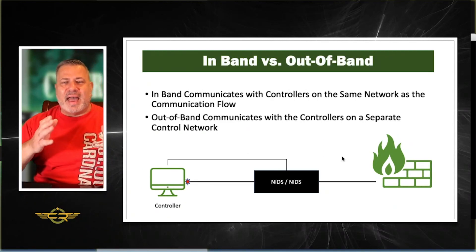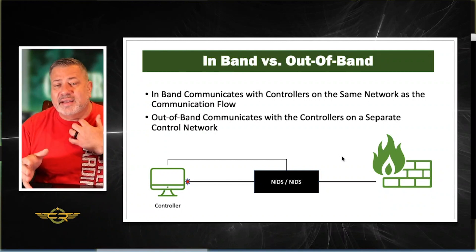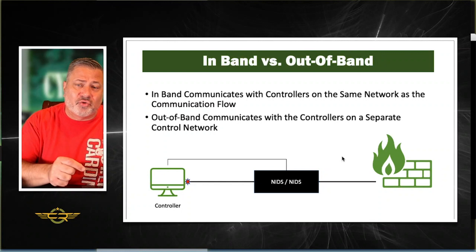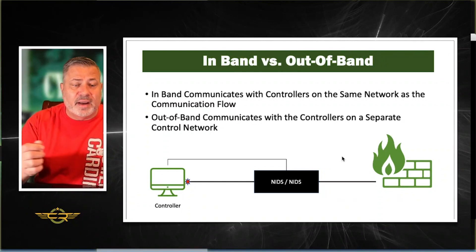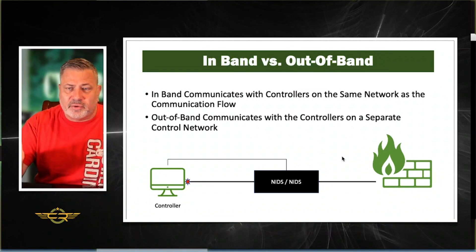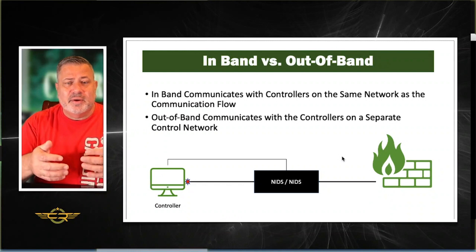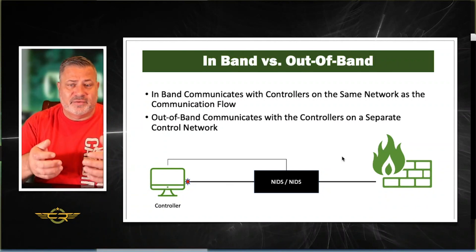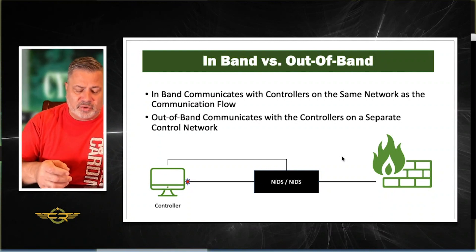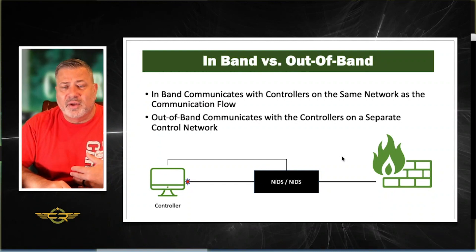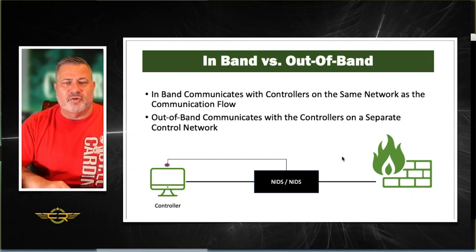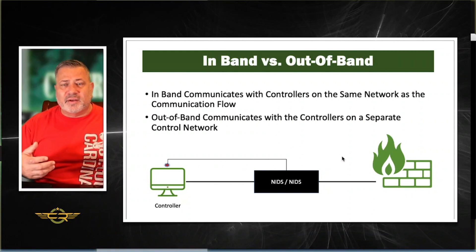We also need to consider how the controller communicates with the IDS or IPS. In-band communication uses the same network as the normal traffic flow — one communication path shared for both traffic and controller communications. Out-of-band uses a totally separate network to communicate, so when the IDS communicates back with the controller, it travels over a dedicated, independent communication path.